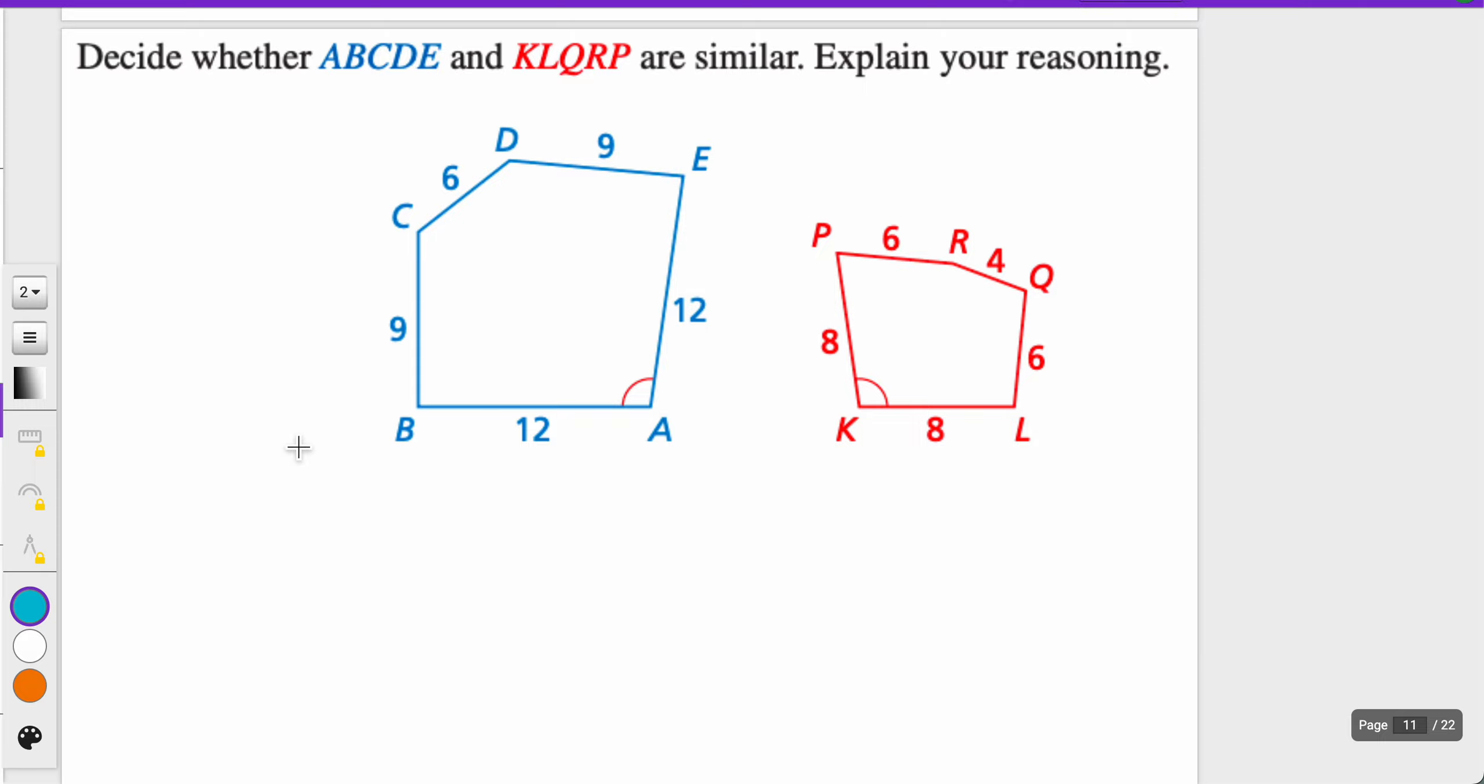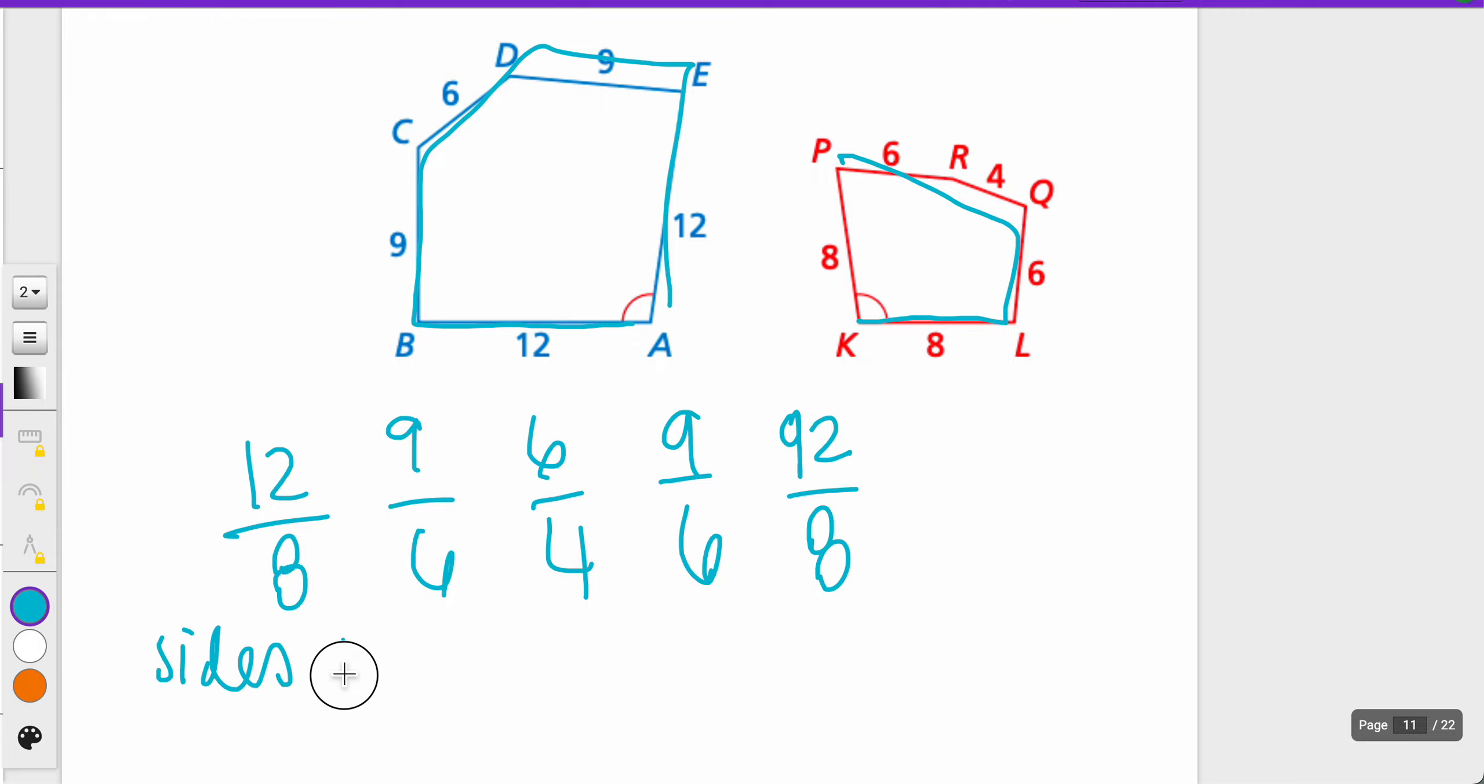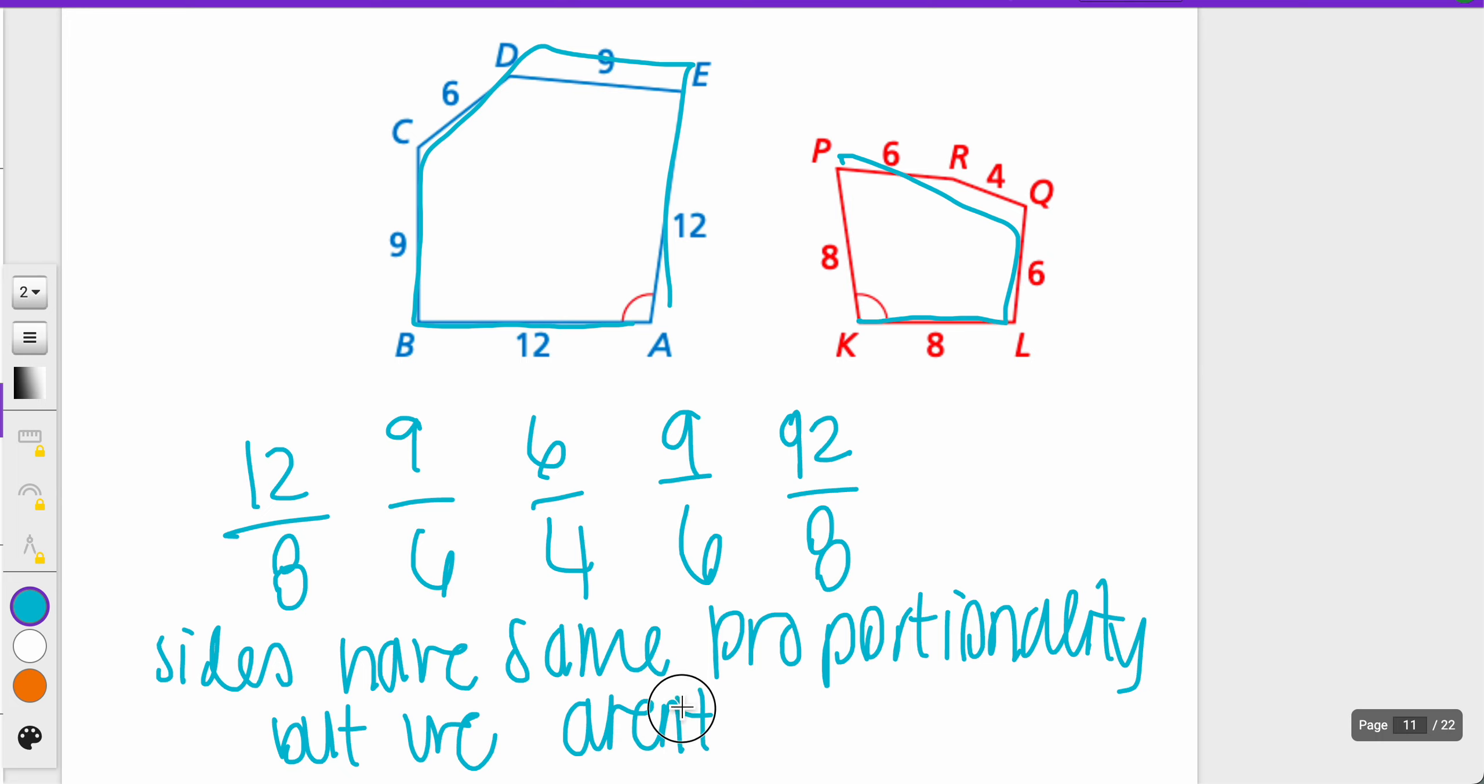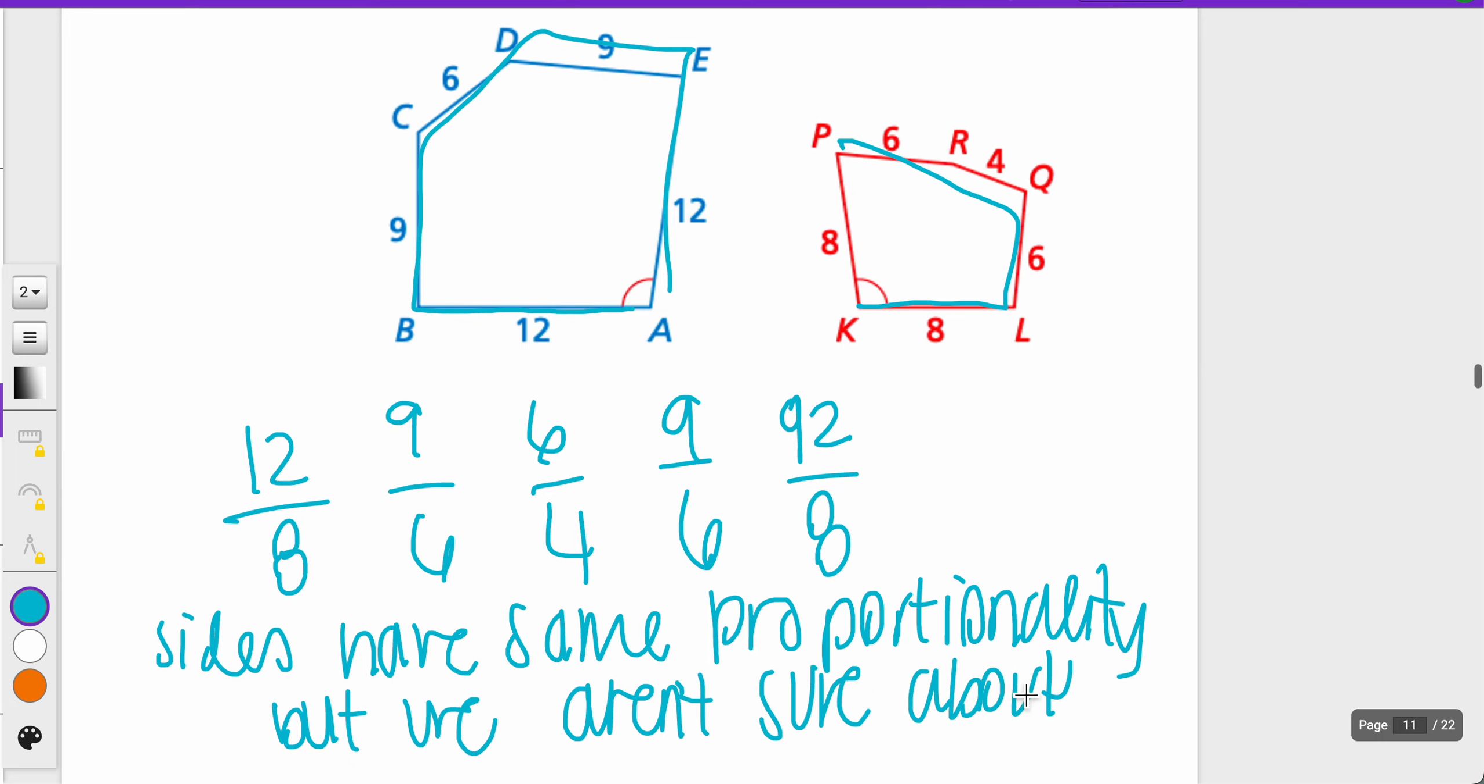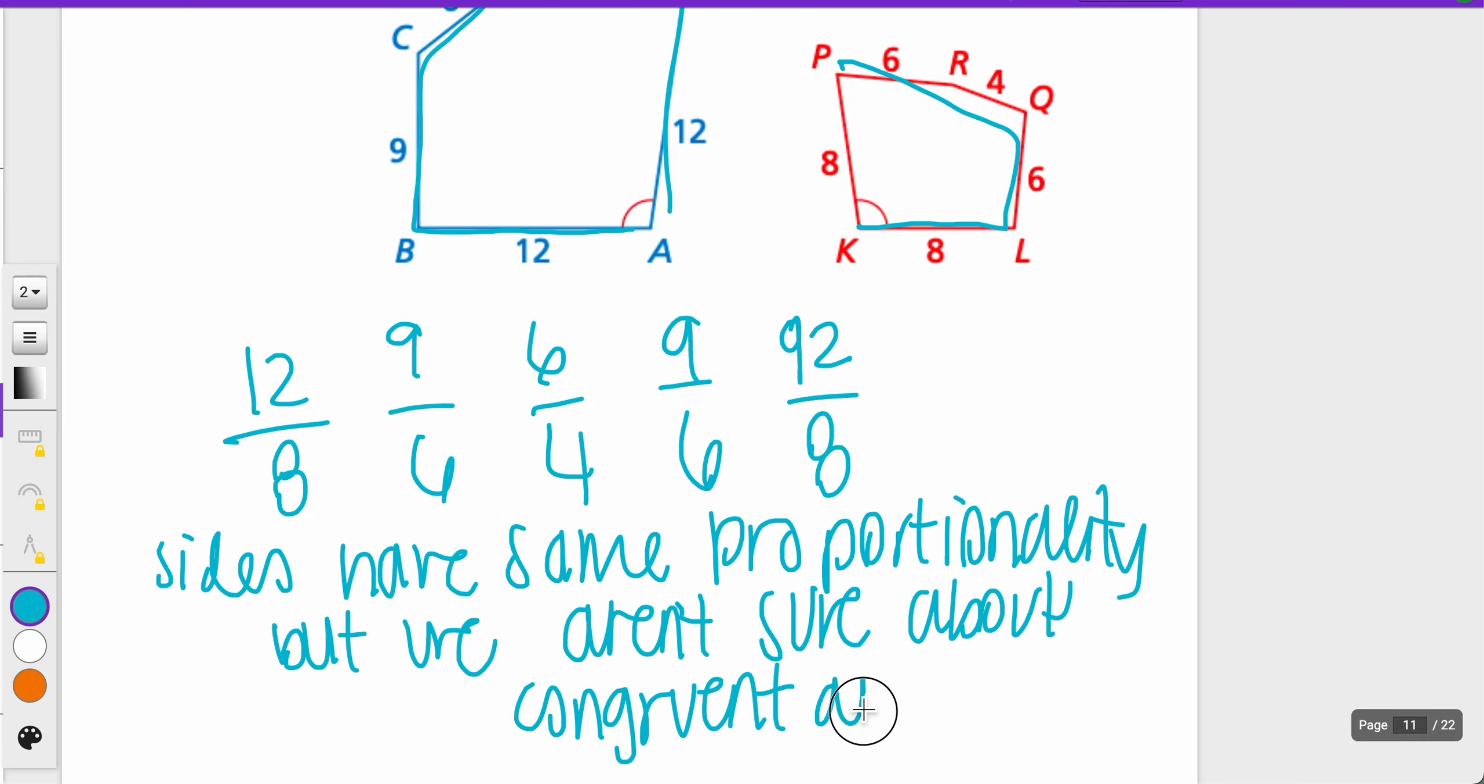The last one we have together, decide whether ABCDE and KLQRP are similar and explain your reasoning. ABCDE goes this way, so all these side lengths, and then KLQRP, they look like they would have proportional side lengths. 12 to 8 matches 9 to 6, which matches 6 to 4, which matches 9 to 6, which matches 12 to 8 again. The only thing that is missing are the angles. So we can say the sides have the same proportionality, but we aren't sure about the angles. Remember, all angles have to be congruent. So that's one thing you have to keep in mind, proportional sides and congruent angles.